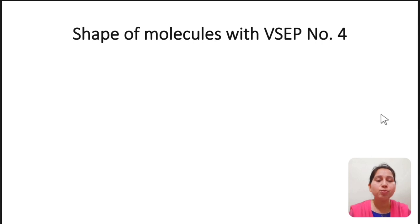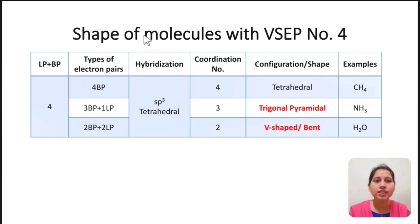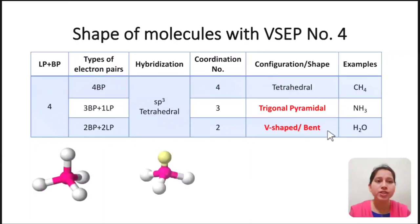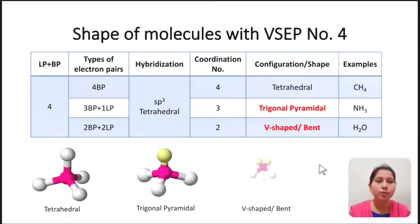Here is a summary for molecules with four valence electron pairs. If all four are bond pairs, the geometry is regular tetrahedral. If there is one lone pair and three bond pairs, the geometry is trigonal pyramidal. If there are two bond pairs and two lone pairs, the geometry is V-shaped or bent. Examples we have seen: methane, ammonia, and water.